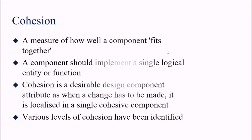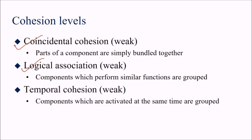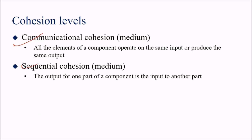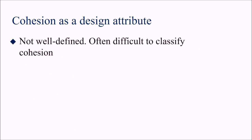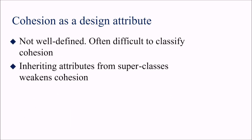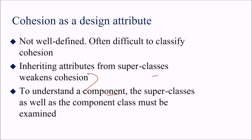Various levels of cohesion have been identified: coincidental cohesion, logical association, temporal cohesion, procedural cohesion, communication cohesion, sequential cohesion, functional cohesion, and object cohesion. Cohesion as a design attribute is not always easy to classify. Inheriting attributes from a superclass weakens cohesion — to understand a component, both the superclass and the component class must be examined; an object class browser assists with this.